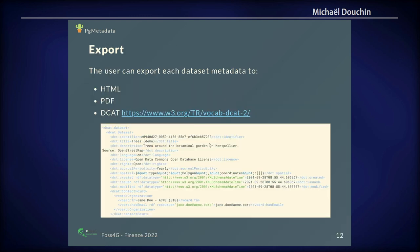The user can also export the metadata in different formats: HTML, PDF, and also DCAT, which is a standard vocabulary — a way of writing metadata in XML — so you can use that to import into other tools if needed.